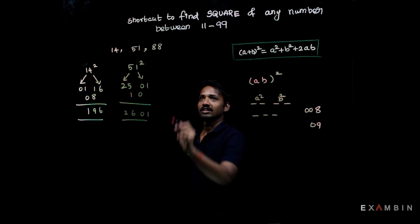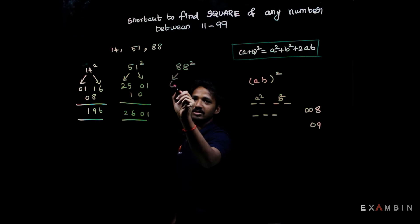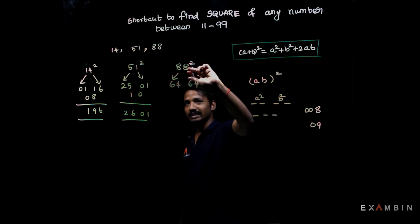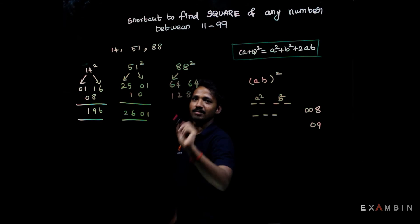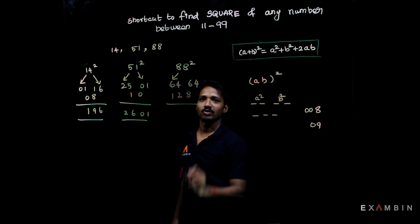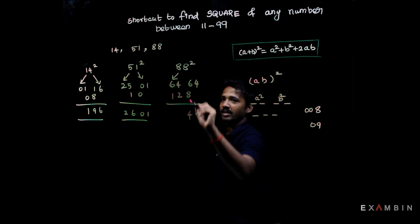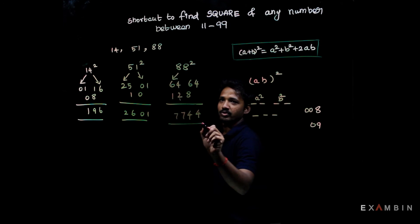The next value is 88. 88²: here if the two numbers are the same, it will be much simpler. 8² = 64, another 8² = 64, and you need to calculate 2 × 8 × 8. Again, 8 × 8 = 64, 64 × 2 = 128. Here you need to write it as a 3-digit number: 128. So 4, 6 plus 8 equals 14 carry 1, 6 plus 2 plus 1 equals 9, 6 plus 1 equals 7. So the answer is 7744.